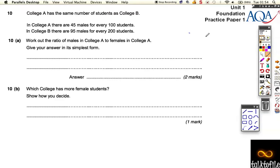This exam paper, we're getting very close to the end, so these questions start to get a little bit tricky now and we have to read them carefully. It says College A and B have the same number of students. In College A there are 45 males for every 100 students. In College B there are 95 males for every 200 students.